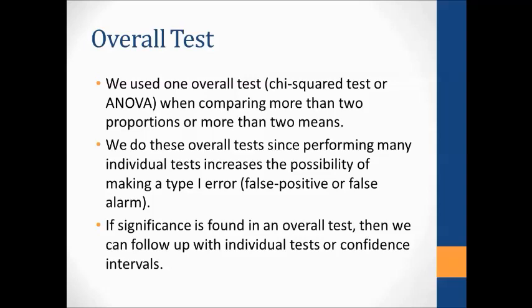In Chapters 8 and 9, when doing a chi-squared test or ANOVA comparing multiple proportions or multiple means, we do one overall test first. If we find significance — get a small p-value — then we do pairwise confidence intervals to find out what is significantly different from what else. We do this overall test first to hold down the probability of a Type I error: rejecting a true null hypothesis, also called a false positive or false alarm. If testing at the 5% level repeatedly when the null is true, eventually we'd get a false positive. So we do one overall test, then follow up with individual comparisons.